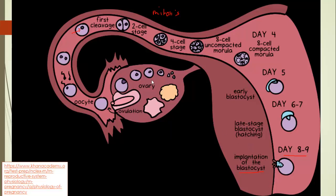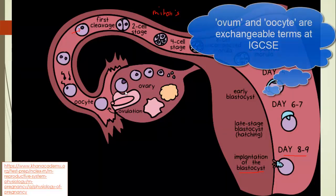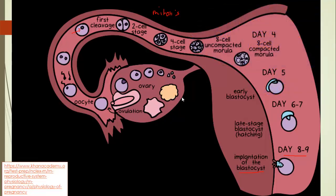This shows the development of an individual follicle becoming larger, then bursting to release the ovum, and then becoming the corpus luteum. The corpus luteum kicks out progesterone, maintaining the lining of the uterus — but this won't last forever under normal circumstances. Once the corpus luteum disintegrates, we lose our source of progesterone and the lining will be lost, and the blastocyst implanted there would be lost along with it.